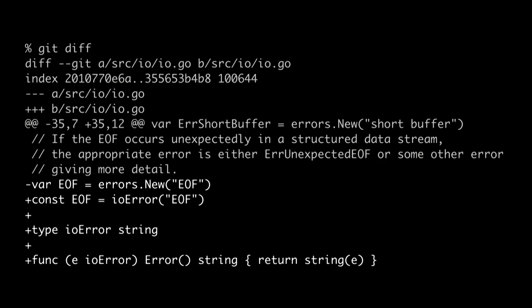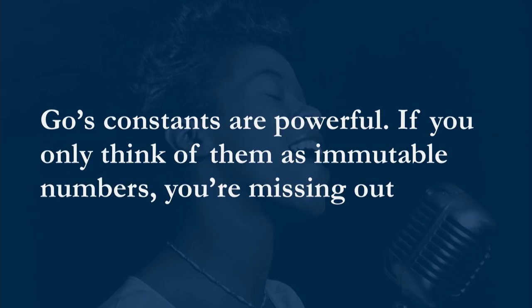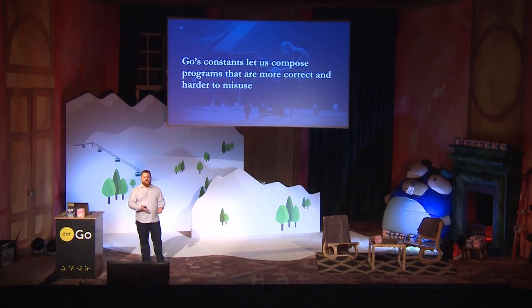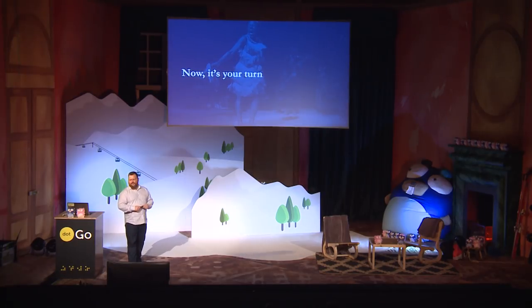Now this change is probably a bit of a stretch for the Go 1 contract. Marcel is going to talk later about the much wider changes happening to error handling in Go. I don't think it's applicable to try and make this change to the standard library, but there's absolutely no reason that you can't adopt this pattern if you use sentinel errors in your packages. Go's constants are powerful. If you only think of them as immutable numbers that you can't change, you're missing out on a lot of their power. Go's constants let us compose programs that are more correct and are harder to misuse. Today I've given you three ways to use constants that are probably just more than a typical fixed number. But now it's over to you — I'm excited to see what you can do with these ideas. Thank you very much.